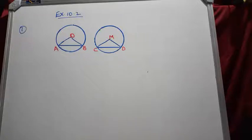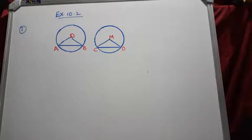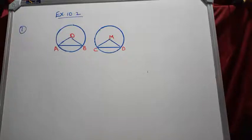Now we can move to Exercise 10.2. The questions are based on Theorem 10.1. The statement of Theorem 10.1 is: equal chords of a circle subtend equal angles at the center. We have proved this theorem using the congruence rules.